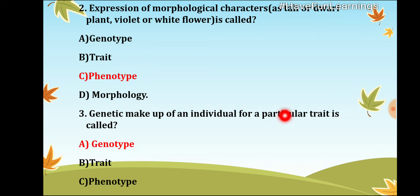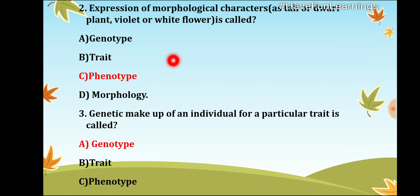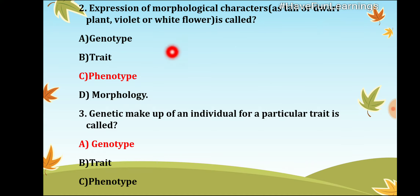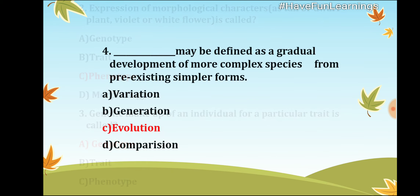The genetic makeup of an individual for a particular trait is represented as genotype. So to summarize: morphological characters expressed visibly are phenotype, and the genetic representation of those characters is genotype.